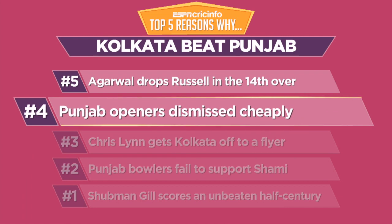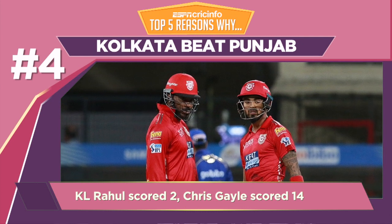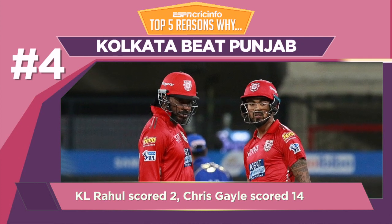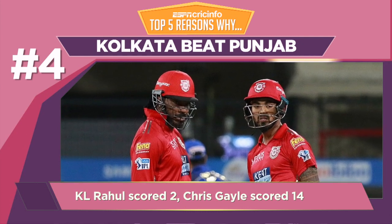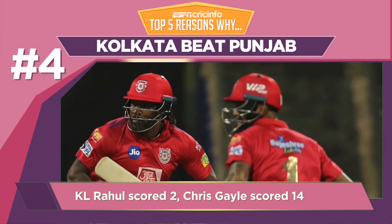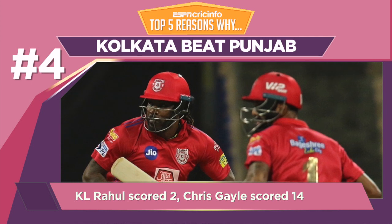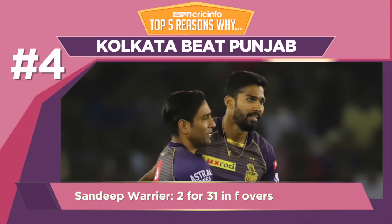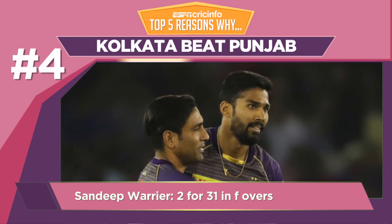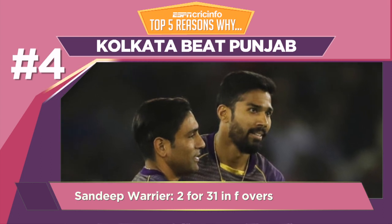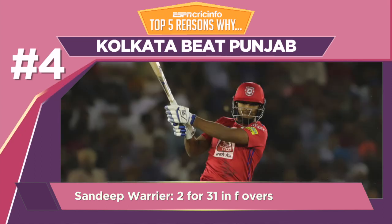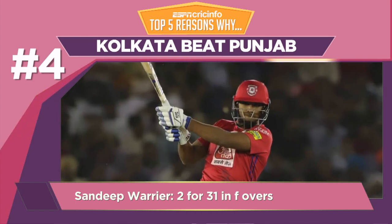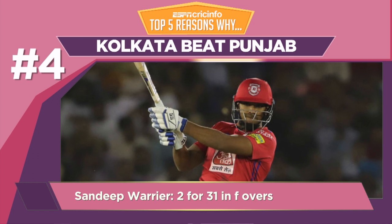Reason number 4: Punjab openers dismissed cheaply. The opening pair of Rahul and Gayle has been the pillar of Punjab's batting — the two are the highest and second highest run scorers for Punjab respectively. However, Sandeep Warrior dismissed both openers in the power play, in a setback to the hosts. Punjab could only manage 41 runs in the first 6 overs.